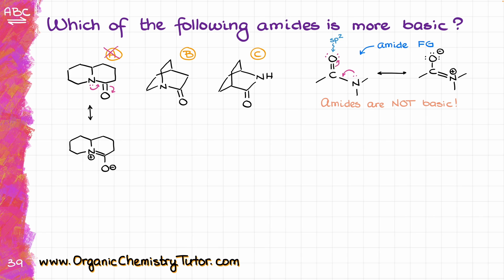Let's do the same analysis for molecule B. In that case, we would take the electron pair on the nitrogen, move that towards the carbonyl, and that would give me a resonance structure looking like that. And here we actually do have a problem. This bond that I have over here would be a pi bond — and that pi bond is actually impossible. The geometry of a bicyclic compound will simply not allow us to have a pi bond right over there and have a stable molecule.